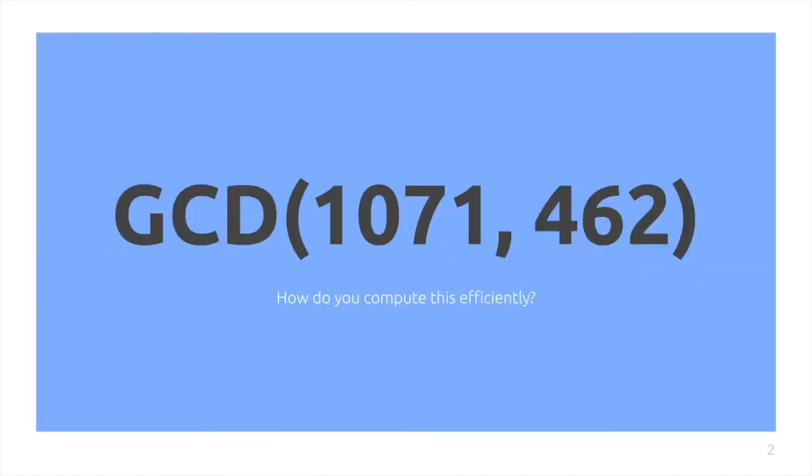Fast GCD. How do you efficiently compute the GCD of 1071 and 462?